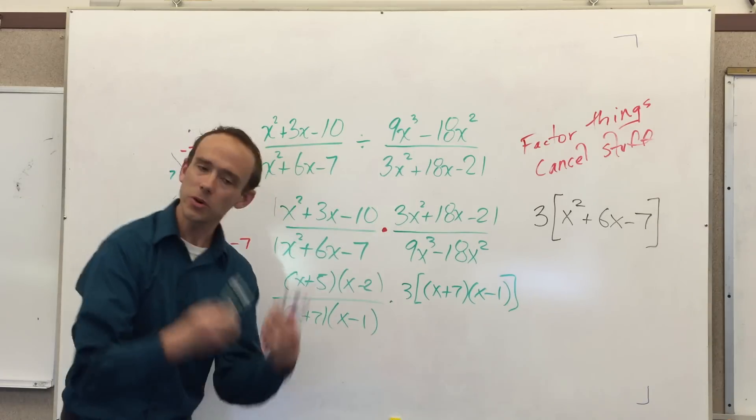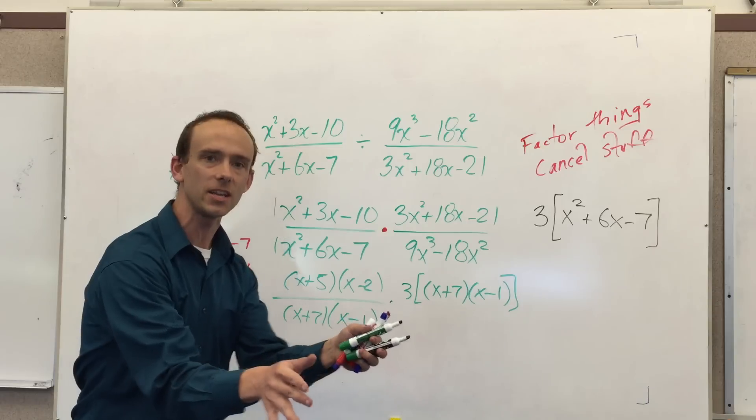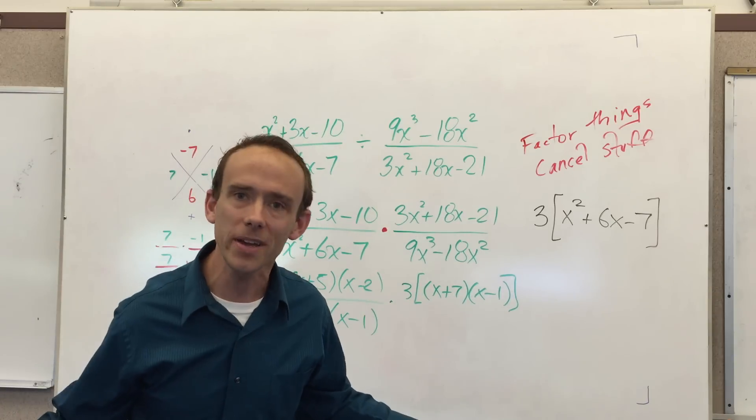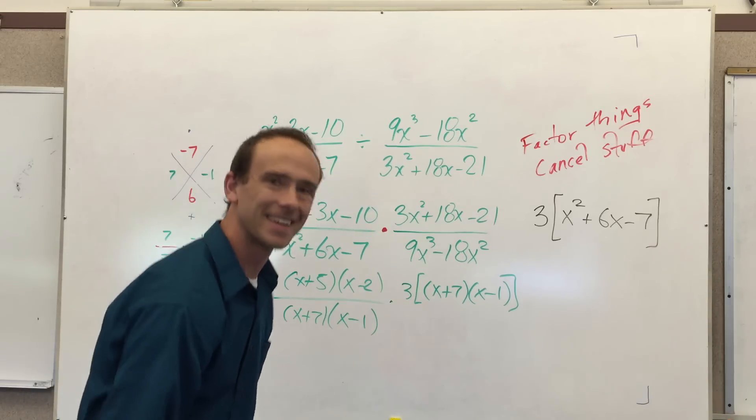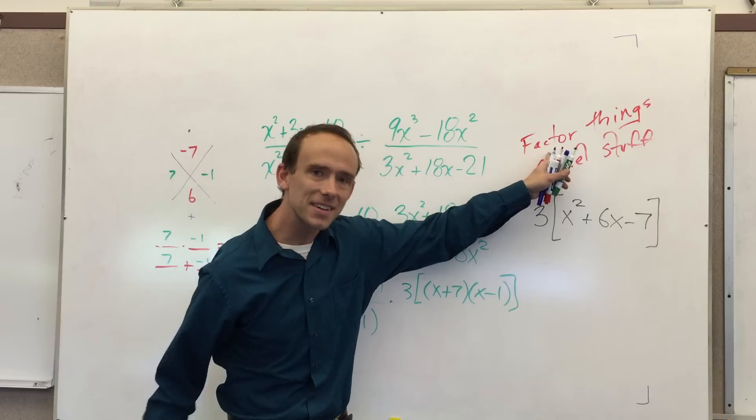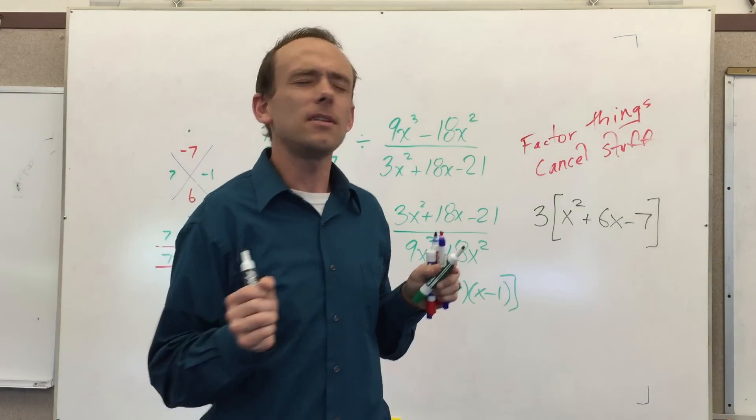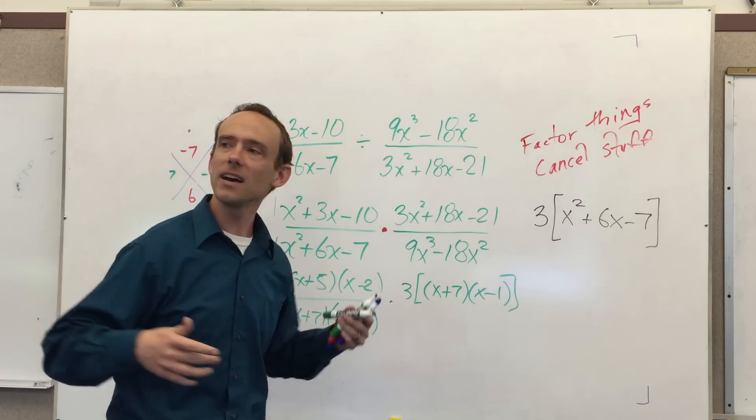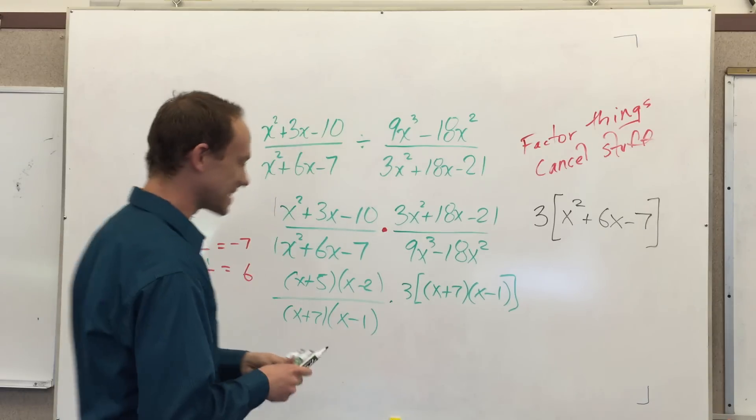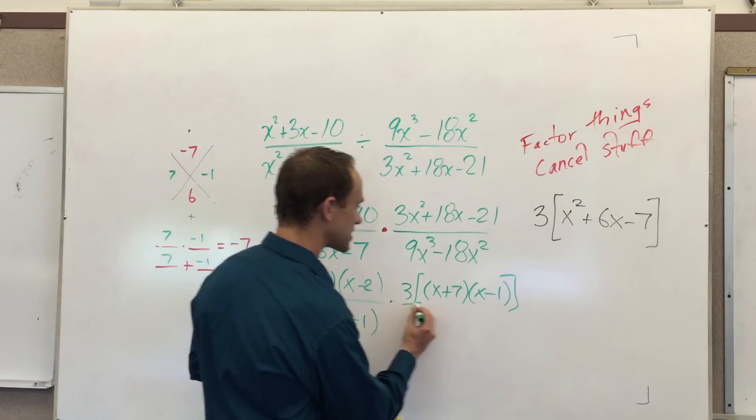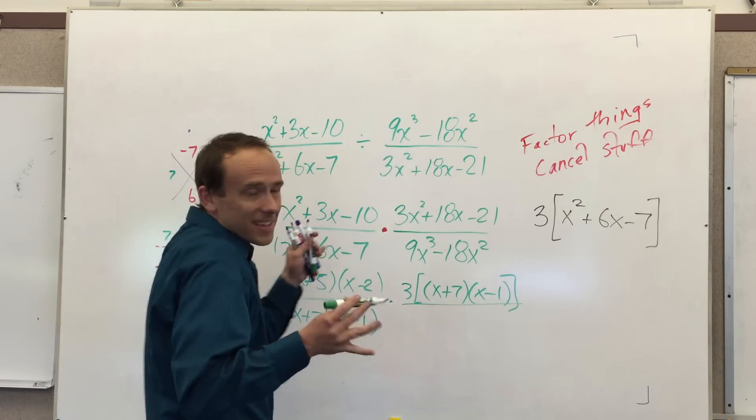I mean, it looks like we're doing a lot of steps, people. But basically, when you're dividing, you invert and multiply. And at that point, just simplify. And how do you simplify? You factor things. And then you cancel stuff. See, when there's no students in the room, it echoes so bad in here, I can't help but sing sometimes. It's kind of like me in the shower.